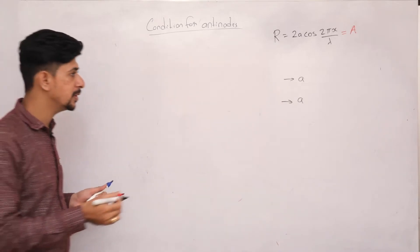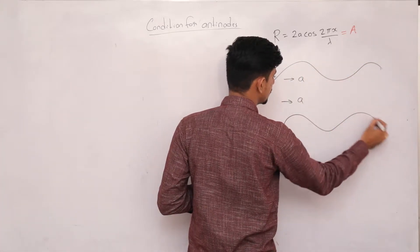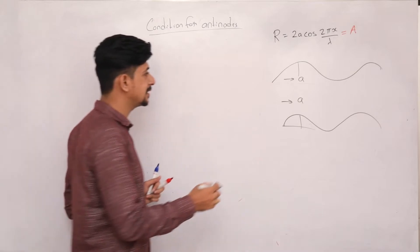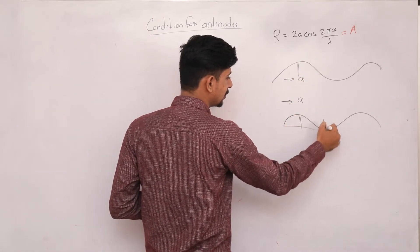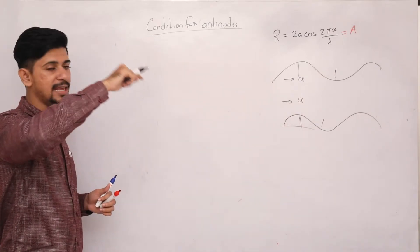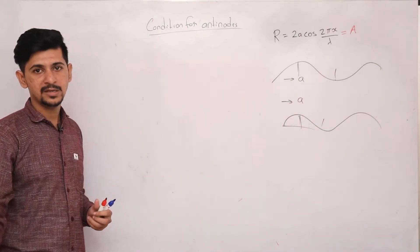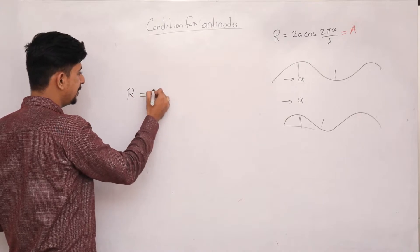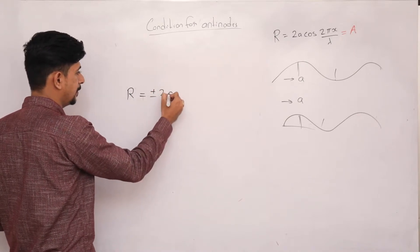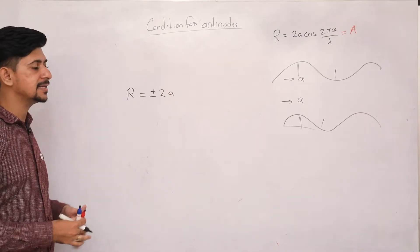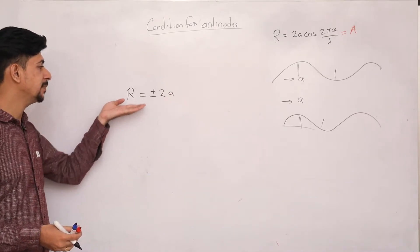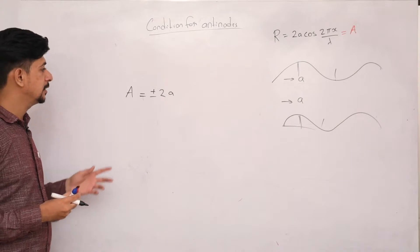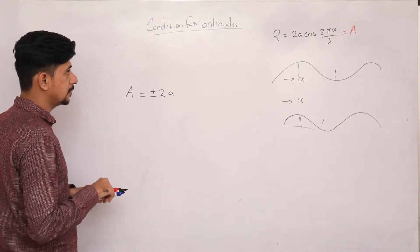When the two identical waves superpose with crest meeting crest, the resultant amplitude is maximum, say 2a. When crest meets trough, the resultant is minus 2a. So from this I can say that the resultant amplitude for an anti-node can be either plus or minus 2a.